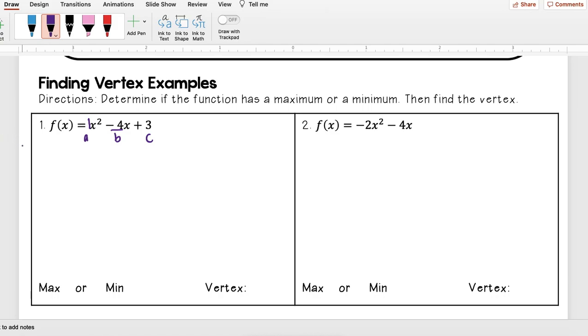My first step is I want to find the axis of symmetry, my x value, which is -b/(2a). Now I'm going to plug in my values. So I'm going to have a negative, my b value is -4, over 2 times a, which is just 1. Well, a negative times a negative is just going to be a positive. 2 times 1 is 2.